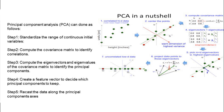The next step is to create a feature vector. The feature vector will contain many principal components, each with different weightage. The highest weightage components are kept and the least weightage ones can be discarded. Finally, recast the data along the principal component axes. These are the steps that take place inside PCA.